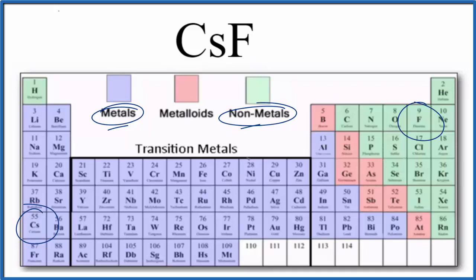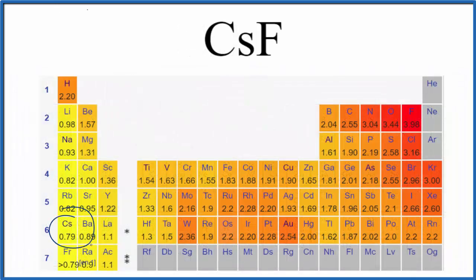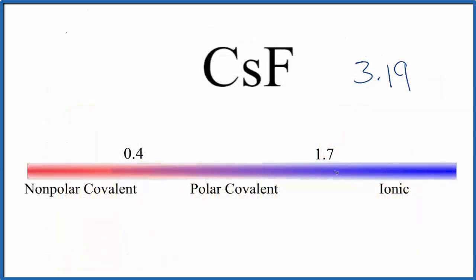So here's cesium, 0.79, fluorine, 3.98. So 3.98 minus 0.79 gives us a difference in electronegativity between cesium and fluorine of 3.19. Let's see what that means. On this scale, above 1.7 we consider it ionic - some scales have 2.0 - but this 3.19, that's way over here.